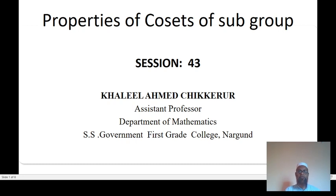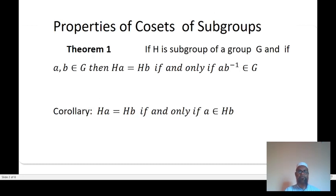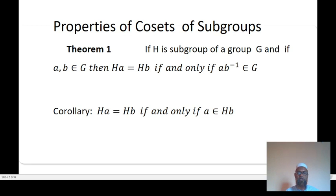Properties of cosets of a subgroup in the form of a theorem. First: if H is a subgroup of a group G and if A, B belong to G, then HA equal to HB if and only if AB⁻¹ belongs to H.